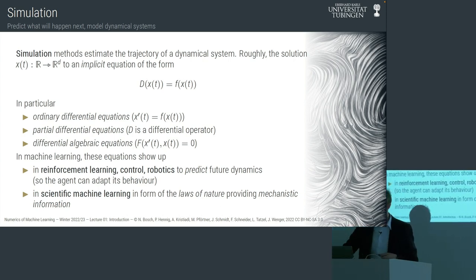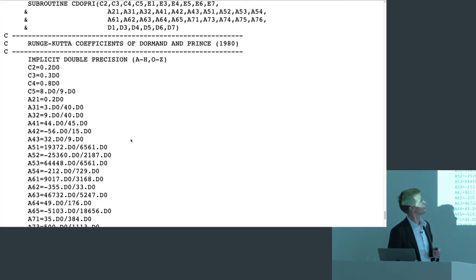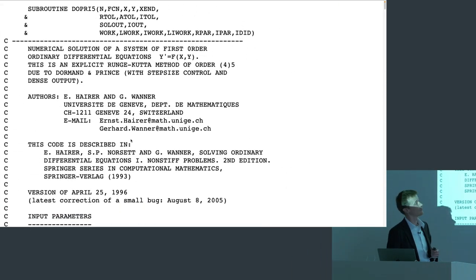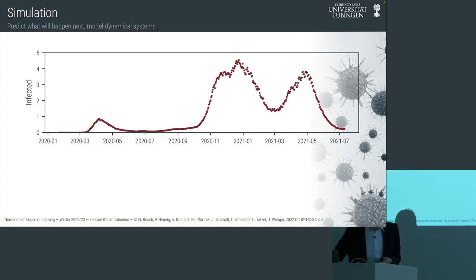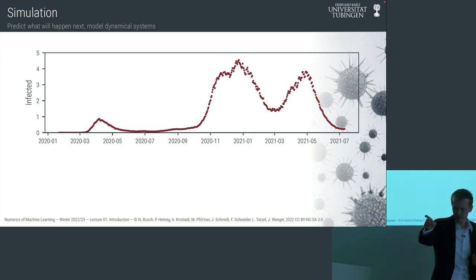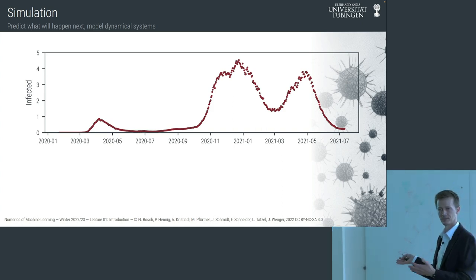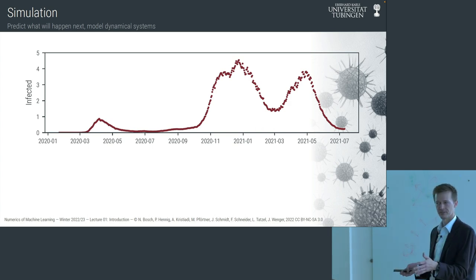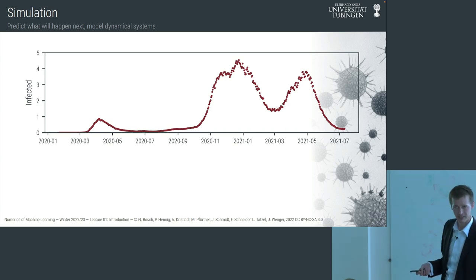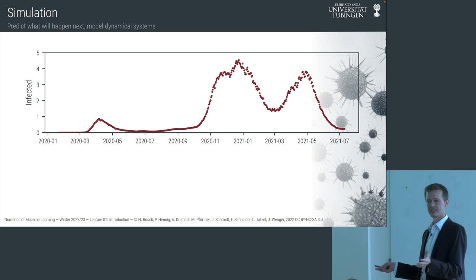The ODE solver for these settings is exactly the Runge-Kutta algorithm I showed you before — that's the prototypical method. Here's an example from our own work, a paper published in NeurIPS a year ago by Jonathan Schmidt. This is COVID cases in Germany over the first one and a half years of the pandemic. You may remember that everyone cared about how this curve would continue — would it keep going up, would it come down? What's the next thing that's going to happen?